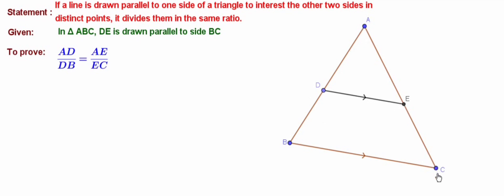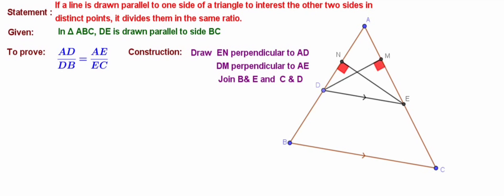To prove this, we need to construct certain things. Draw EN parallel to AD, DM perpendicular to AE, and we need to join points BE and CD. The perpendiculars are clearly shown here in the picture and the other two line segments. Now we have different triangles.